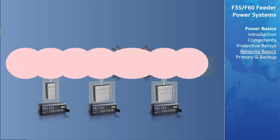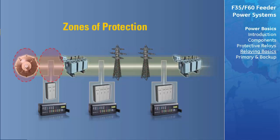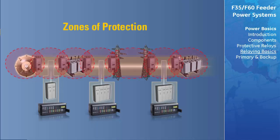One of the protection engineer's most powerful tools is the concept of zones of protection. The boundary of a protective zone represents the region that a particular protective element covers, and it is necessary for these zones to overlap to ensure proper protection. If two zones did not overlap and a fault occurred at the boundaries, no relays would be tripped. For failures within the overlap area, more breakers will be tripped than needed, but the overlap areas are relatively small and the probability of failure in this region is very low.